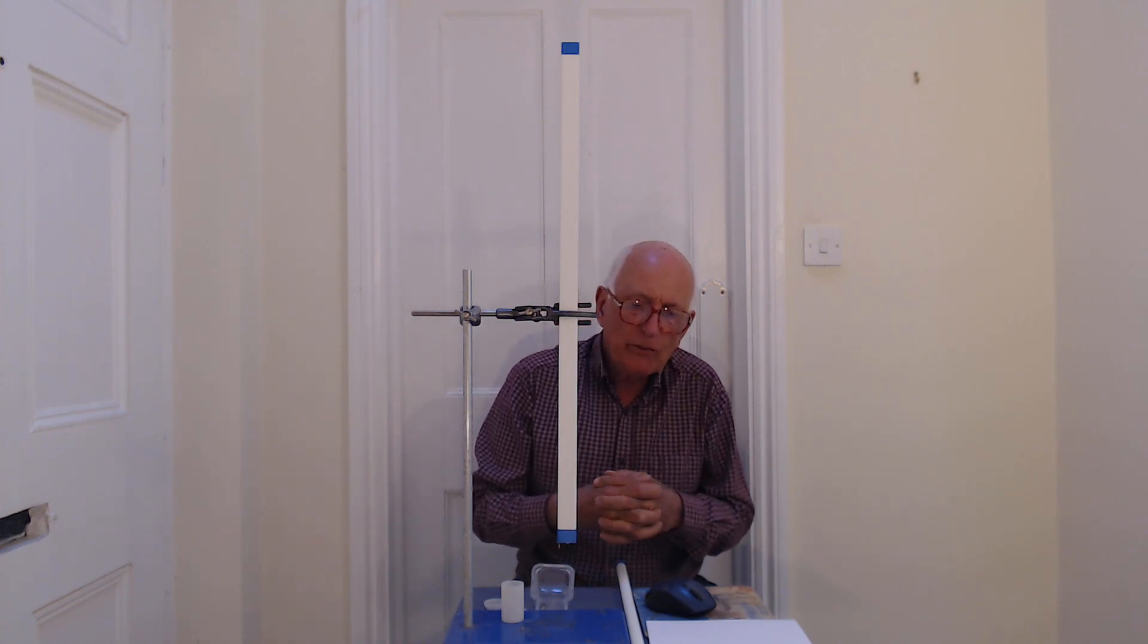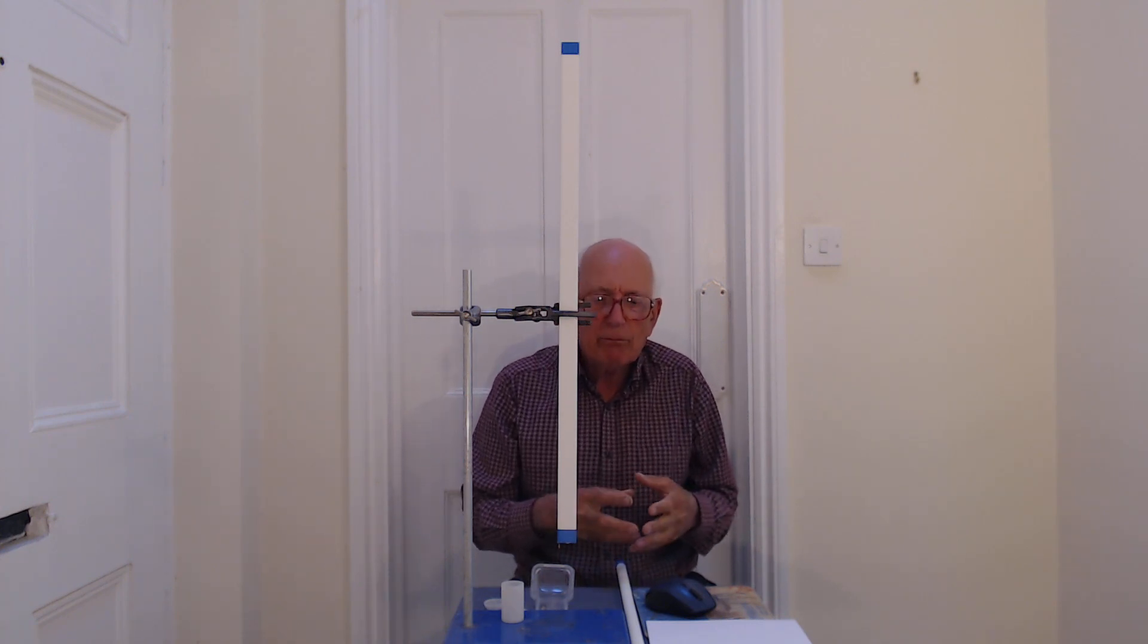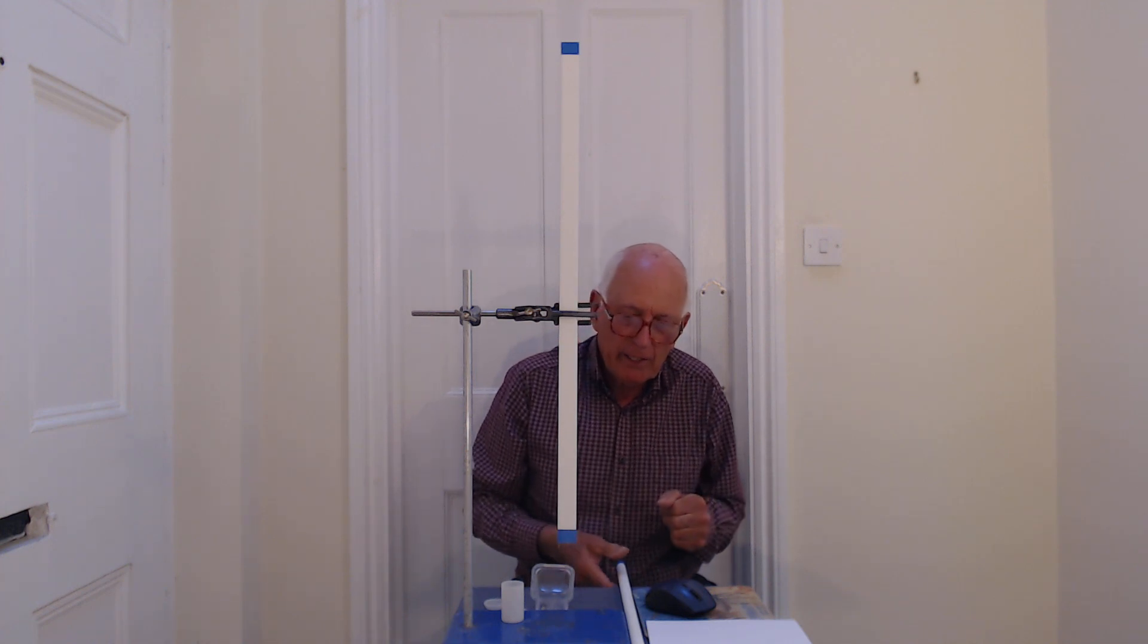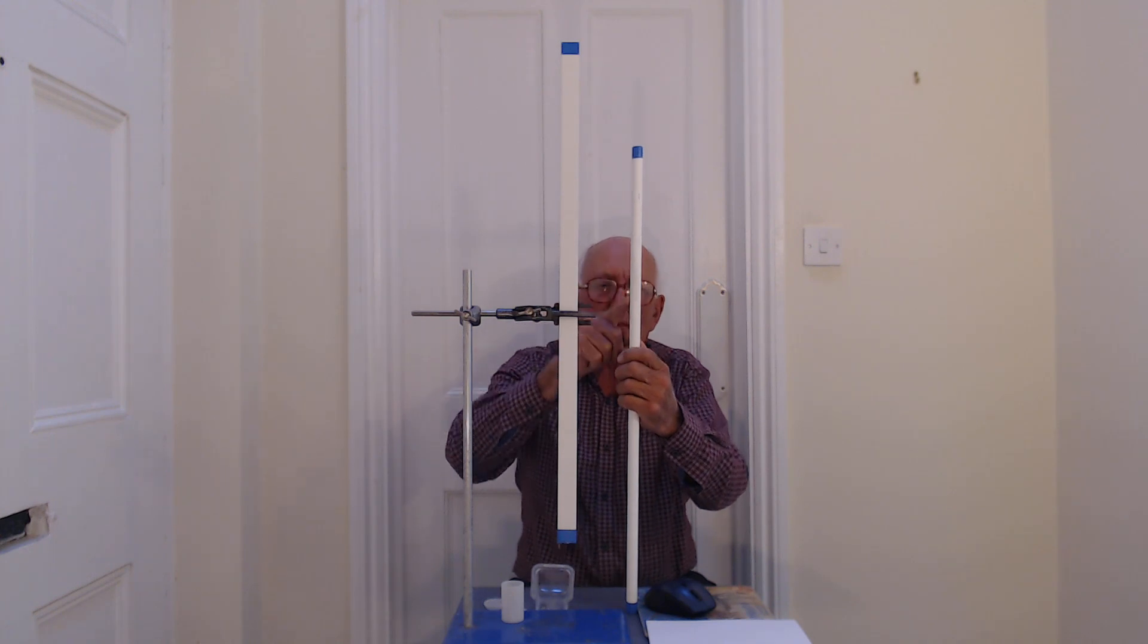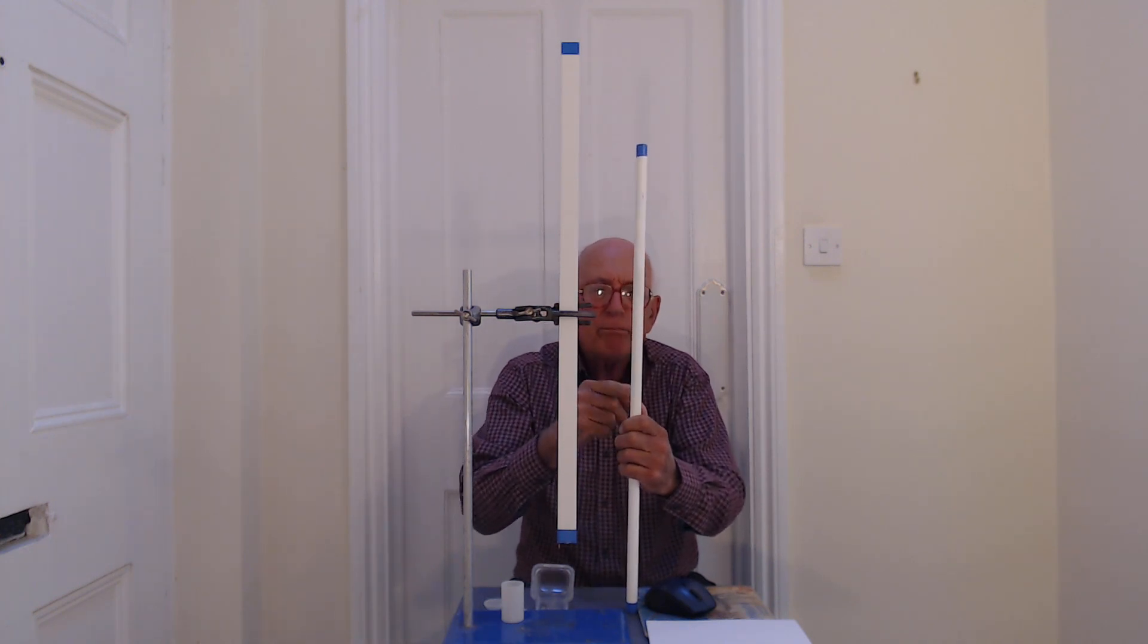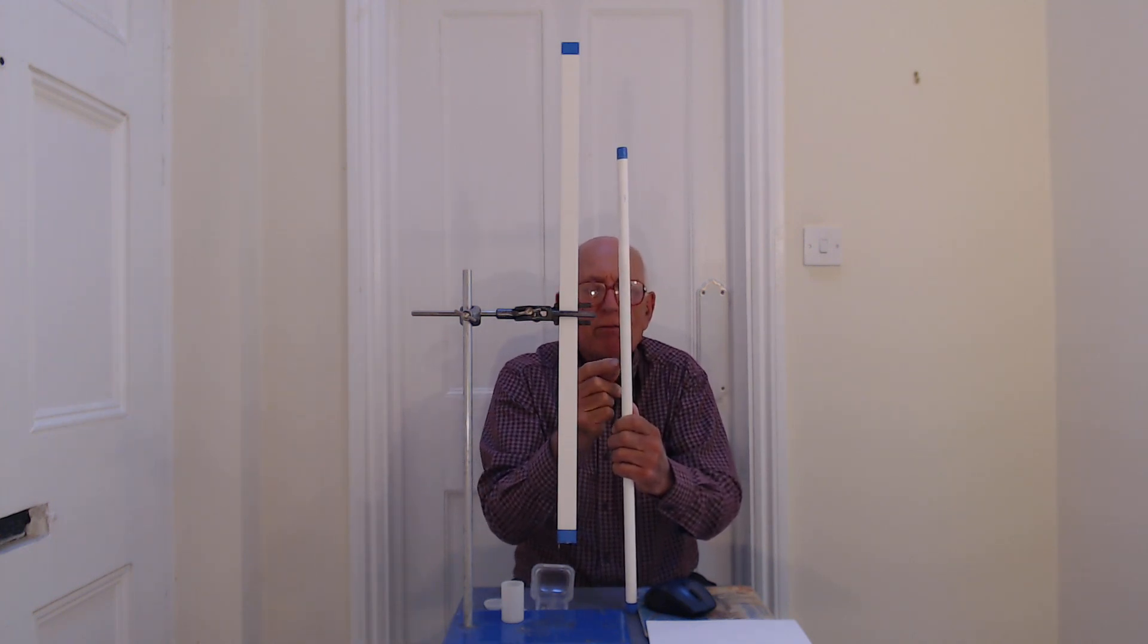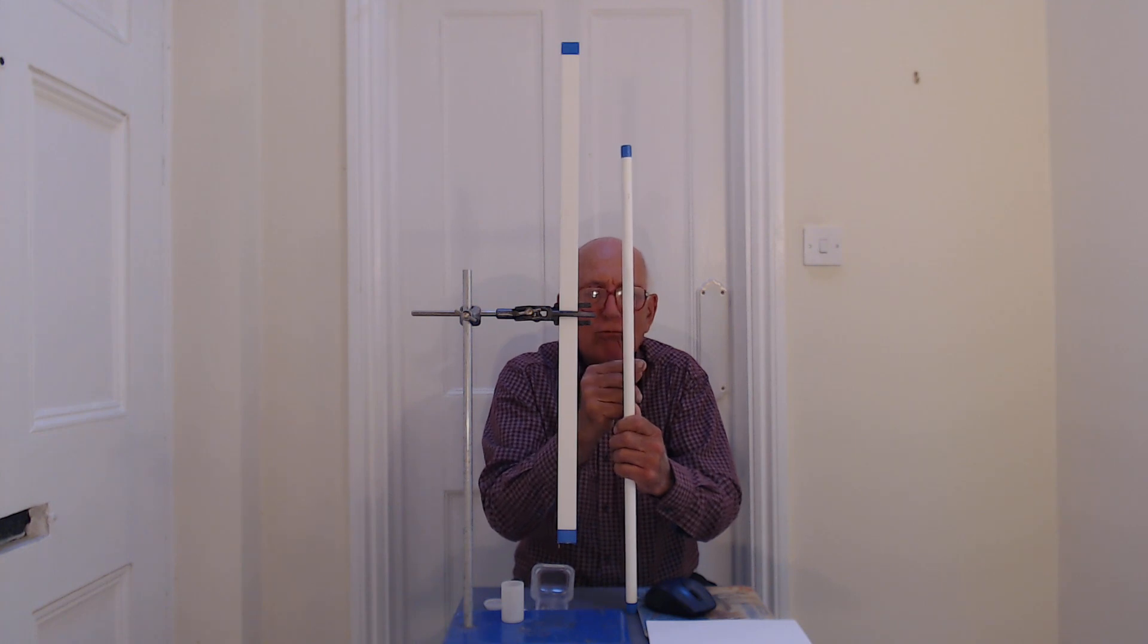This induced voltage produces a current, and this current produces a magnetic field. Well, that's exactly what's happening here, because as the magnet falls down the tube, it produces a voltage, and therefore a current which flows around the tube, and that gives a magnetic field.